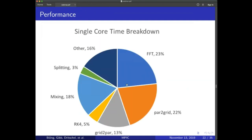Looking at the breakdown of runtime for a single core, the largest component is running the FFTs required for velocity inversion and updating velocity fields. This is followed by the interpolation routines — parcel-to-grid and grid-to-parcel — and mixing and splitting, which also involve substantial interpolation. Together these represent a considerable proportion of runtime — roughly a quarter.